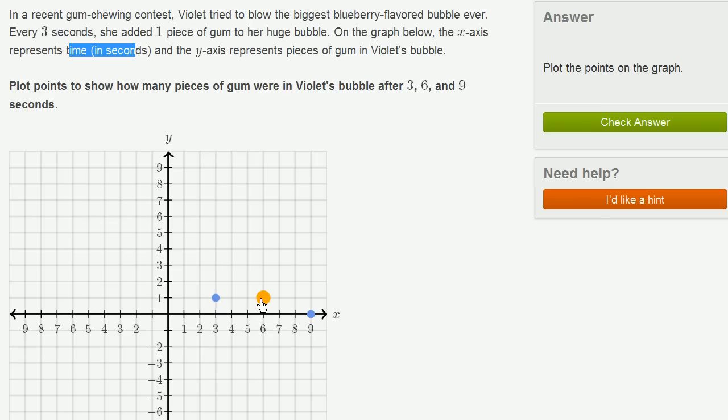Now if three more seconds passed by, she would have added one more, or now she would have two pieces of gum in her bubble. And then if three more seconds passed by, now we're at nine seconds, she would have added one more piece of gum. And now we're at three total pieces of gum.